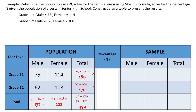So that's why we need to compute a reliable sample size. What is 359? That's the population size. One way of getting the population size without using the table is simply adding 75, 114, 62, and 108 from the given data — that gives you 359. Or you can make use of this table.